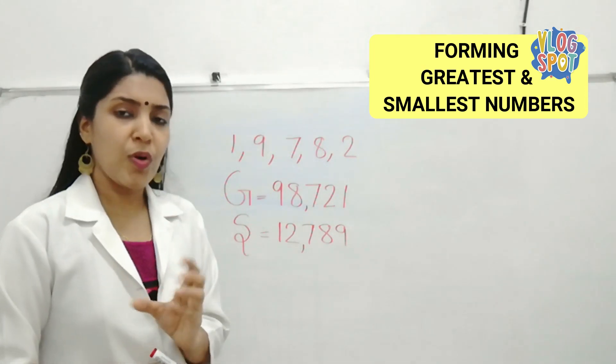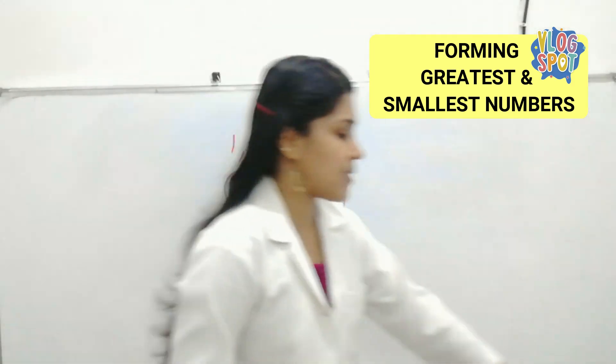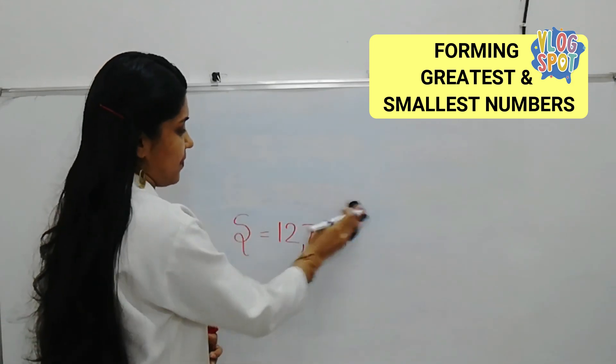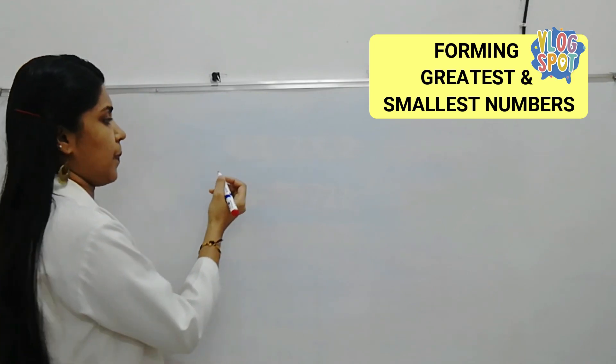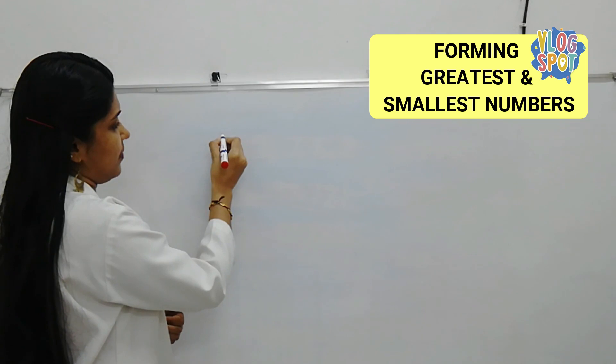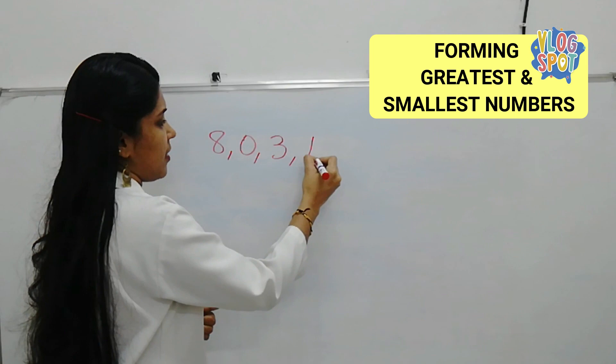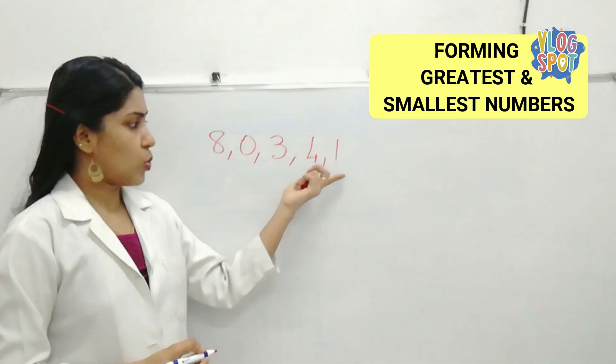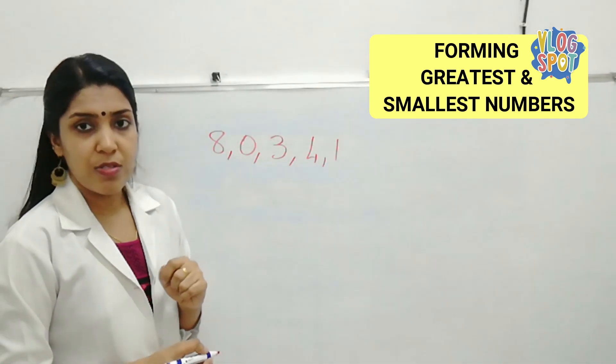Then, as I told you, only you have to be very careful about 0. So, I will show you an example. 8, 0, 3, 4, 1. So, how many digits are here? Here, we have 5 digits and 0 is also there.